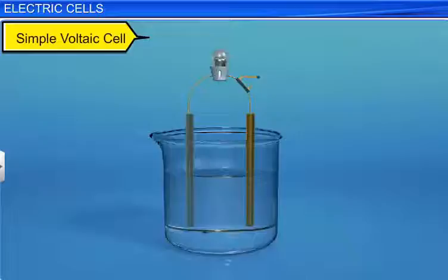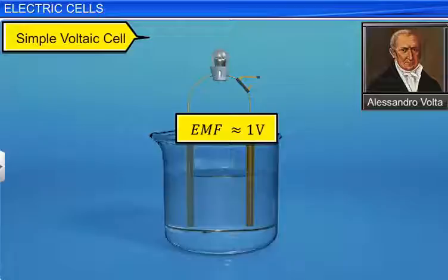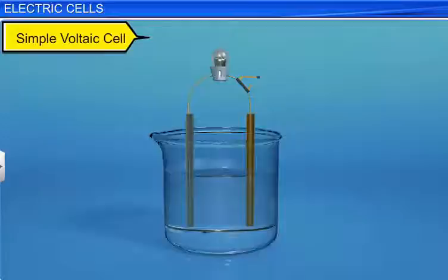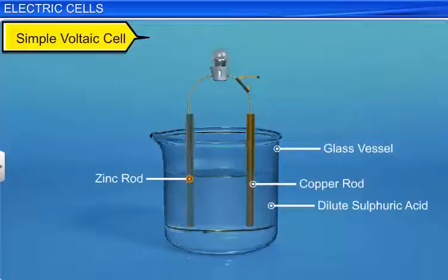Let us now discuss the construction and working of the Voltaic Cell. A Voltaic Cell is the simplest of all devices used to produce a steady current. It was invented by Italian physicist Alessandro Volta. The EMF produced in a Voltaic Cell is of the order of 1 volt. A Voltaic Cell is made up of a glass vessel containing dilute sulfuric acid, a copper rod and a zinc rod immersed in the glass vessel, and conducting wires connected between the copper and zinc rods with a bulb and a key in series.